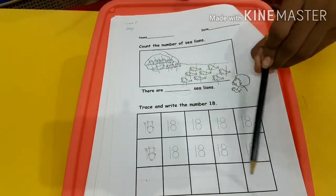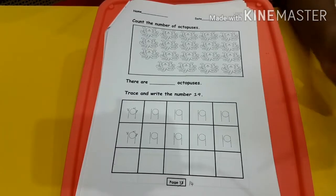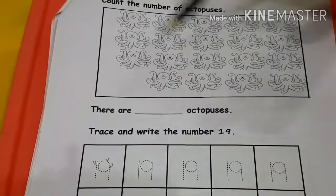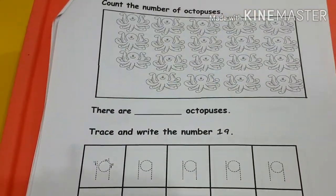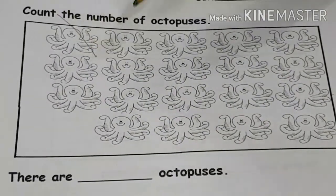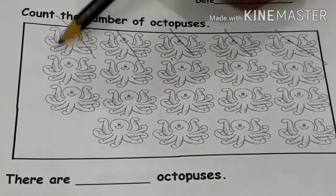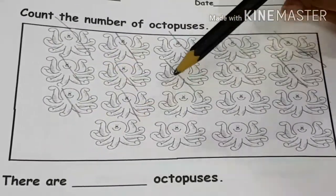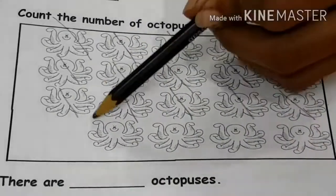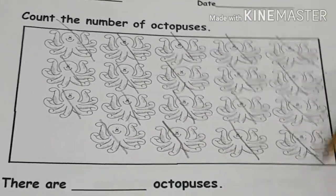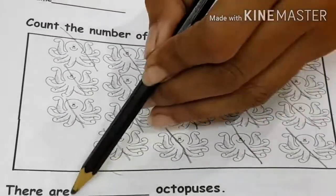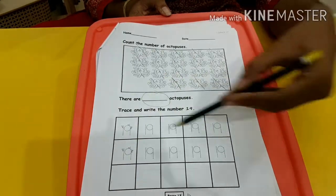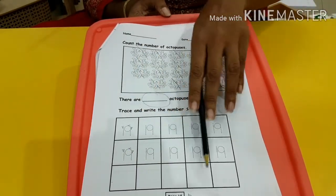Don't forget to write this all by yourself. Turn to page number 14 and you will see a picture of a lot of octopuses. We are going to count and write in the space provided how many octopuses there are: 1, 2, 3, 4, 5, 6, 7, 8, 9, 10, 11, 12, 13, 14, 15, 16, 17, 18, 19. There are 19 octopuses. You will trace and write number 19, and don't forget to write 19 all by yourself.